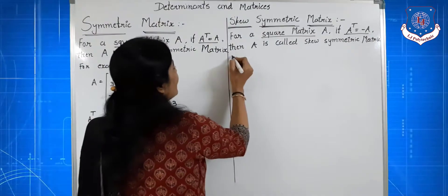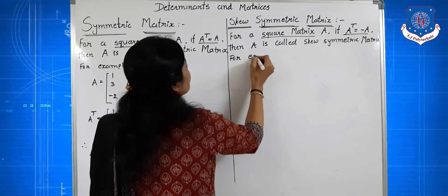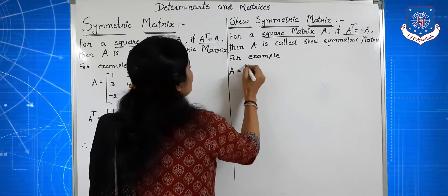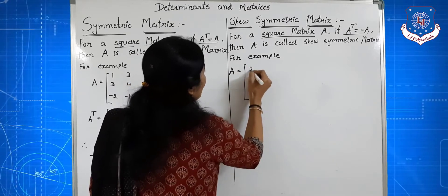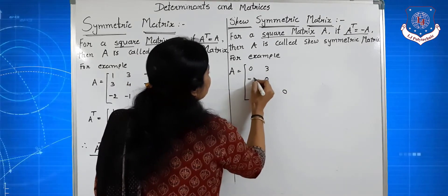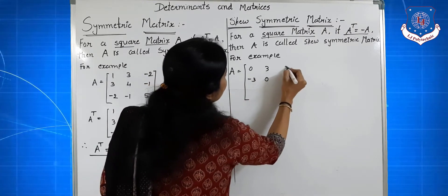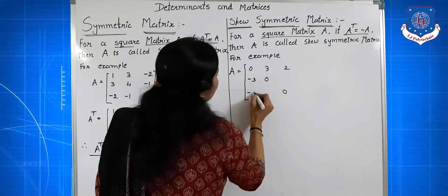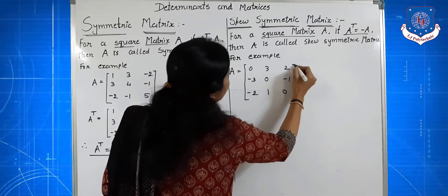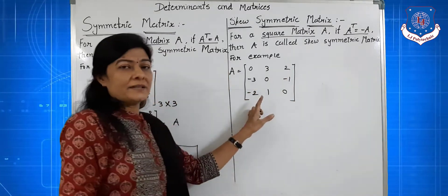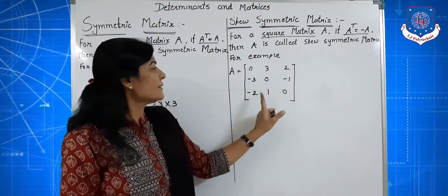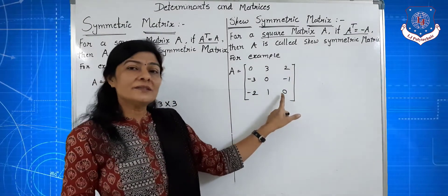For example, matrix A is equal to: 0, 3, 2 in the first row; minus 3, 0, minus 1 in the second row; and minus 2, 1, 0 in the third row.